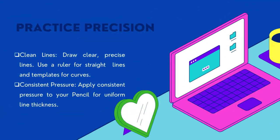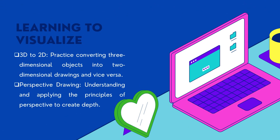Thirdly, practice precision. One of the ways to achieve that is by having clean lines — draw clear, precise lines using a ruler for straight lines and templates for curves. Apply consistent pressure to your pencil for uniform line thickness, so whether you're drawing a thick or thin line, that consistency is to be observed.